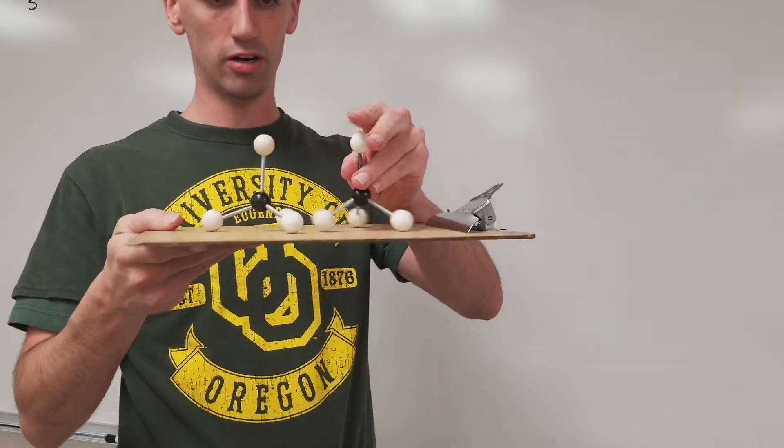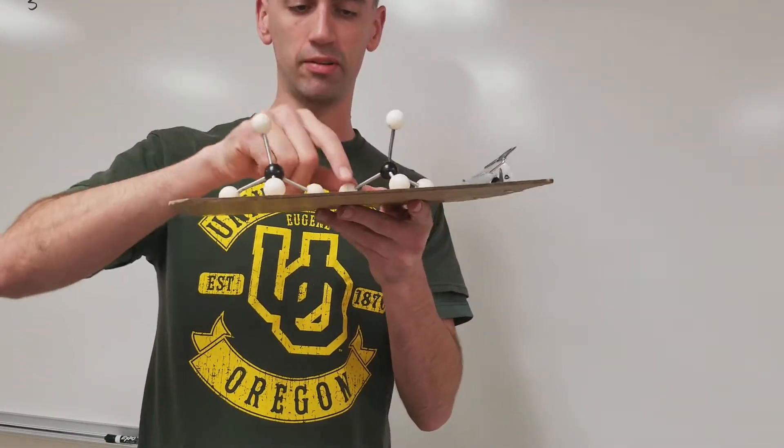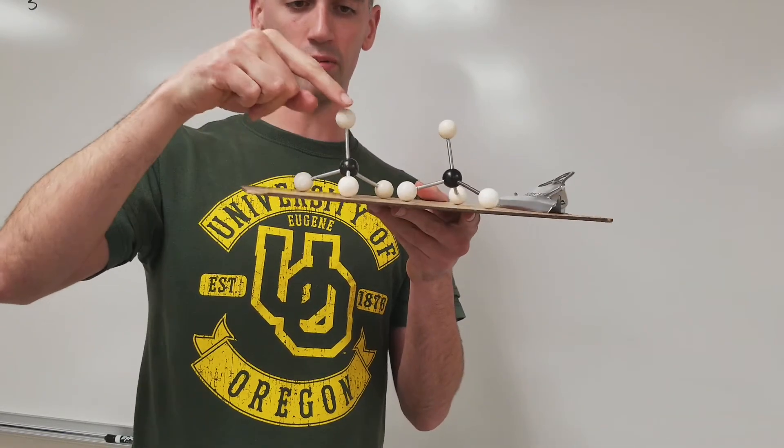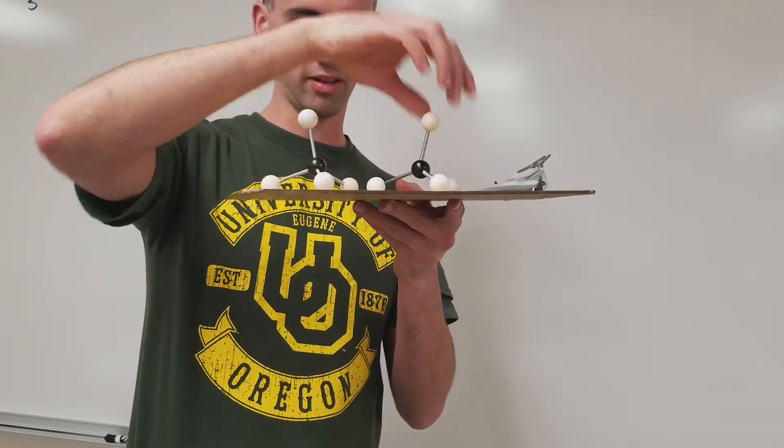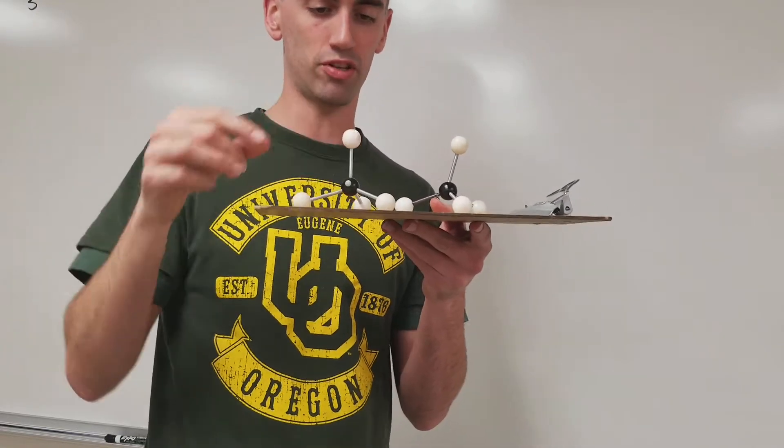These two models are both showing a tetrahedral shape. As far as you've seen with the definition of tetrahedral, it looks like a tripod with an odd one standing up, and they both have it. You flip it over, no matter how you flip it, they've got that tetrahedral shape.